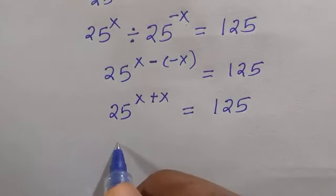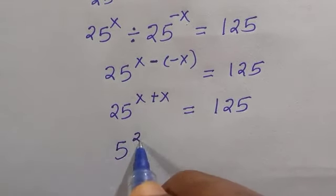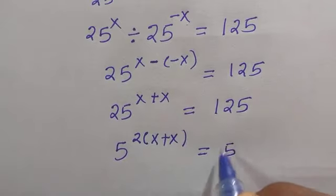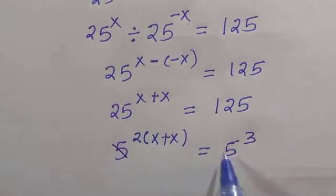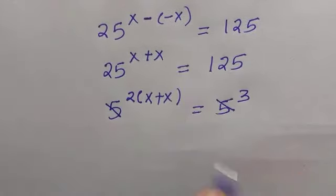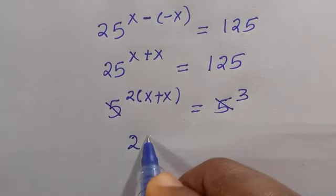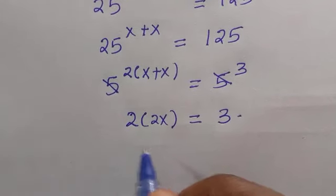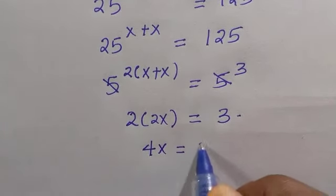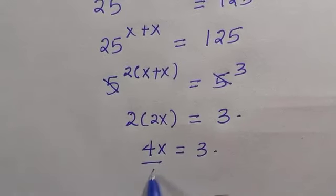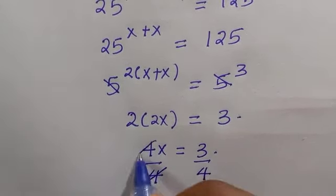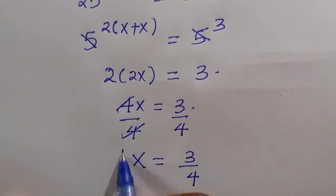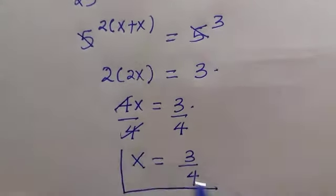We change 25 to base 5, so we have 5 raised to power 2 with bracket x plus x, equals 5 raised to power 3. The bases cancel, so the powers are equal: x plus x is 2x, and 2 times 2x gives 4x equals 3. Dividing by 4, we get x equals 3 divided by 4, which proves the equivalence of both methods.